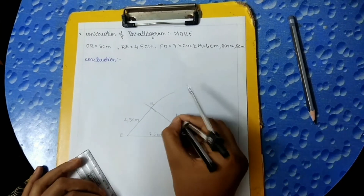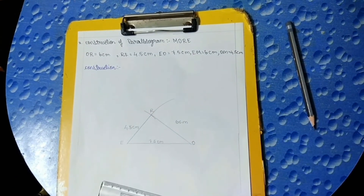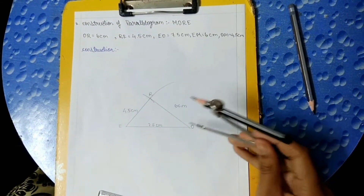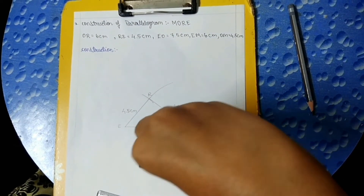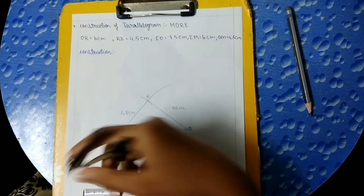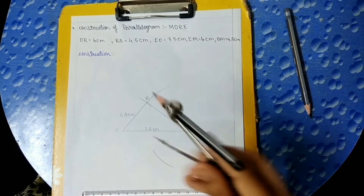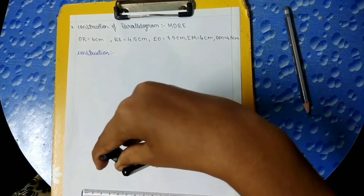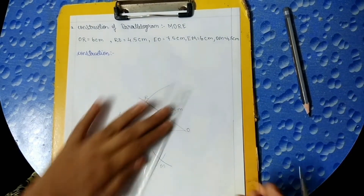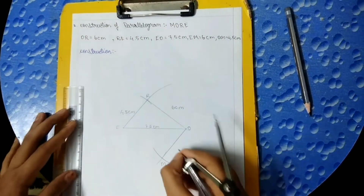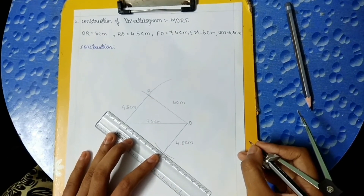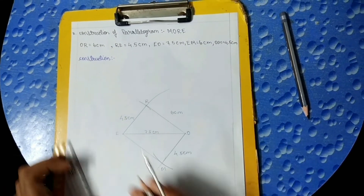Then we should take 6 cm and draw a line from O, keeping it on E and draw an arc. Now this point is known as M. We should draw a line from O to M of 4.5 cm and a line from E to M of 6 cm.